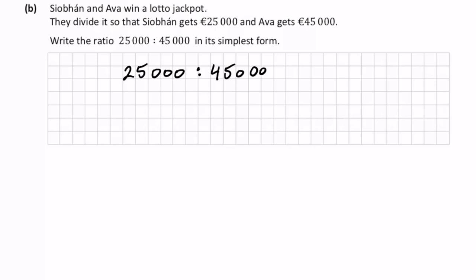That would reduce this down to 25 is to 45. You might notice that 5 goes into both parts here. 5 goes into 25 five times, and 5 goes into 45 nine times. So the answer is 5 is to 9.